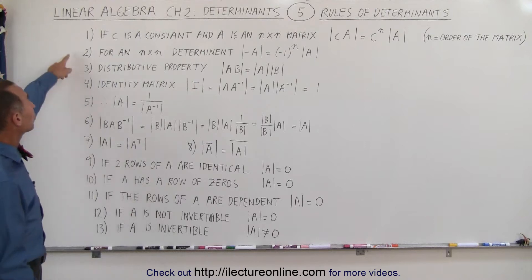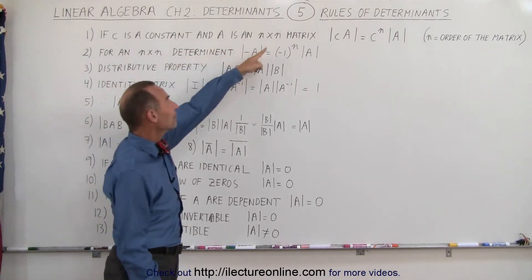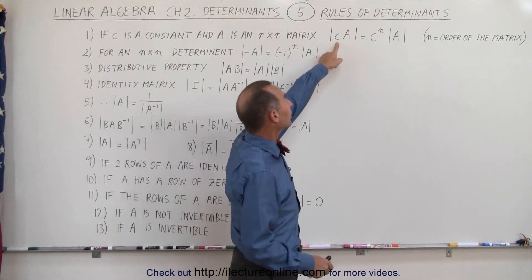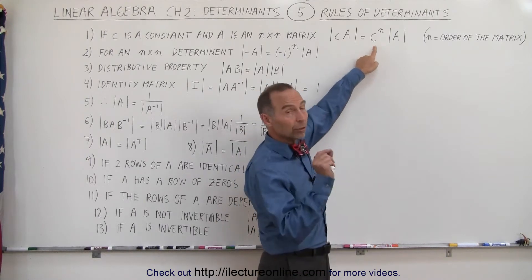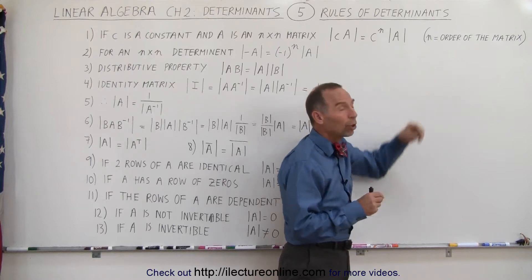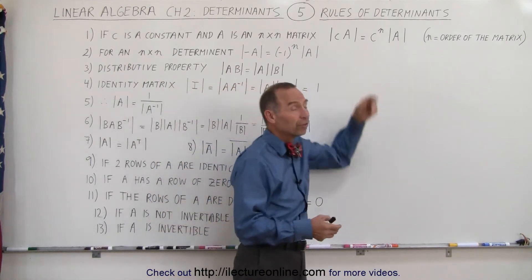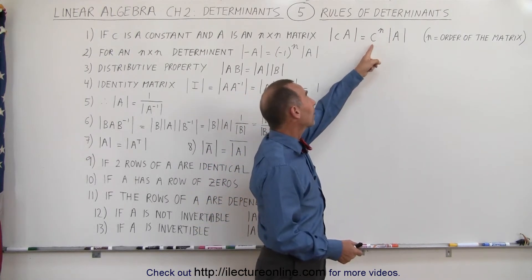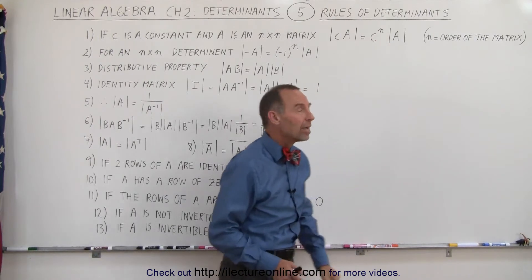There are 13 of them. The first rule is that if there's a constant C and A is an n by n matrix, then the determinant of the product of the constant and the matrix is equal to the constant raised to the n power times the determinant of matrix A. N is the order of the matrix — for a 2 by 2 matrix n is 2, for a 3 by 3 matrix n is 3.